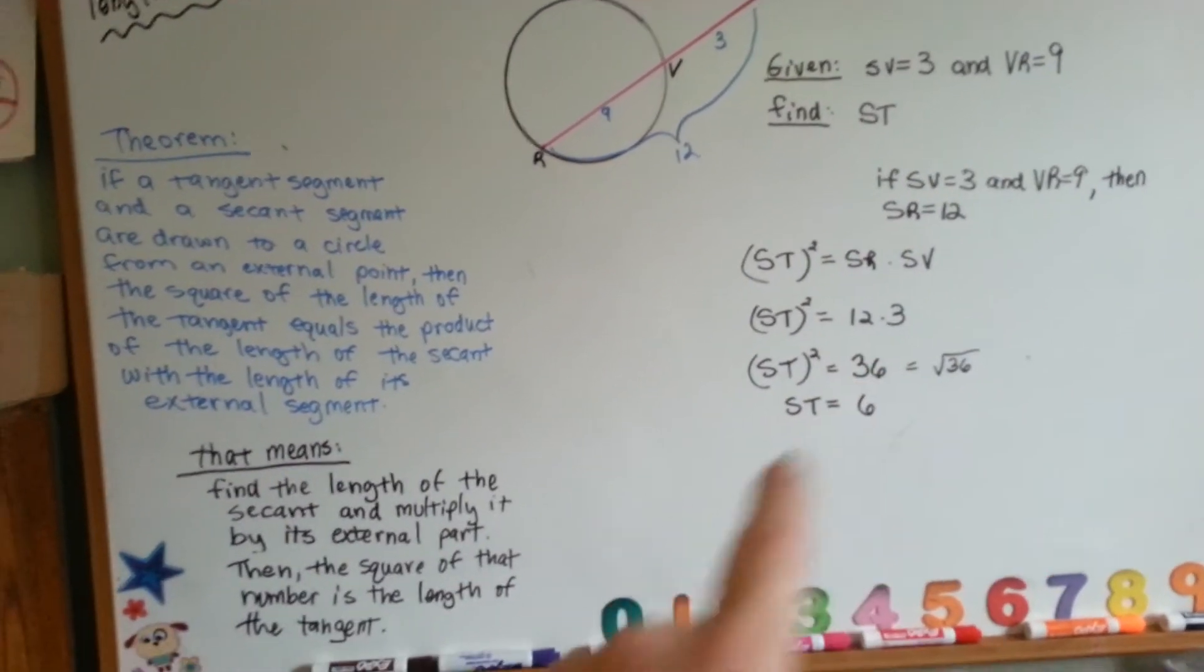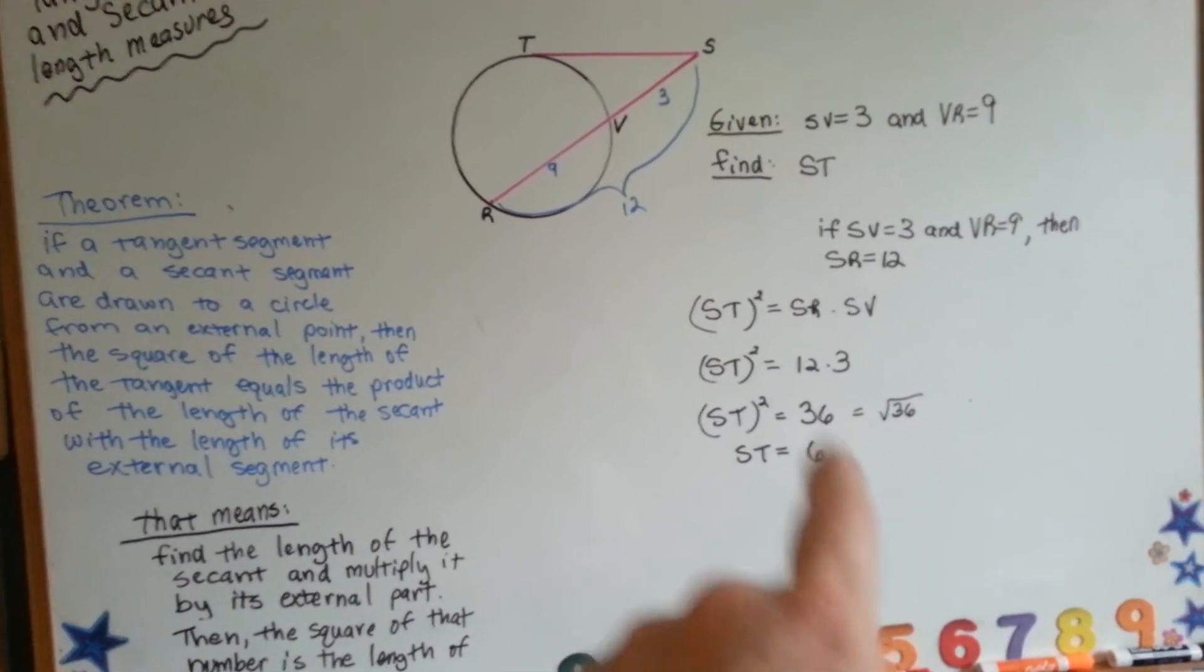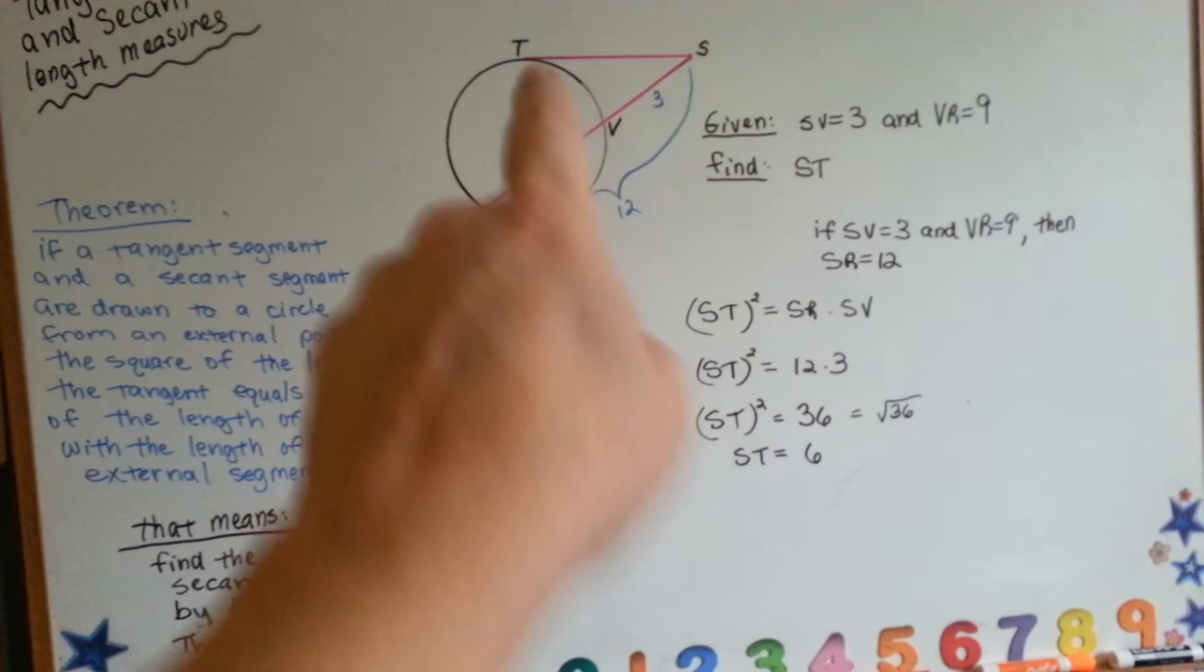12 times 3 is 36. You're going to take the square root of that, and that number, which is 6, is going to be the length of the tangent.